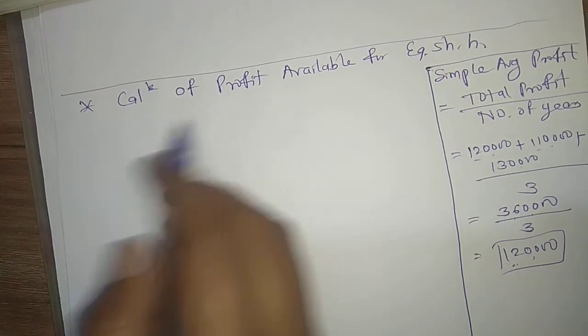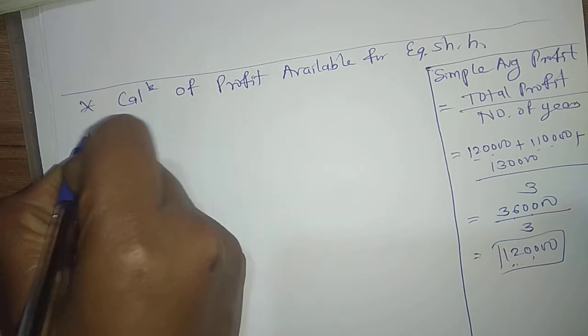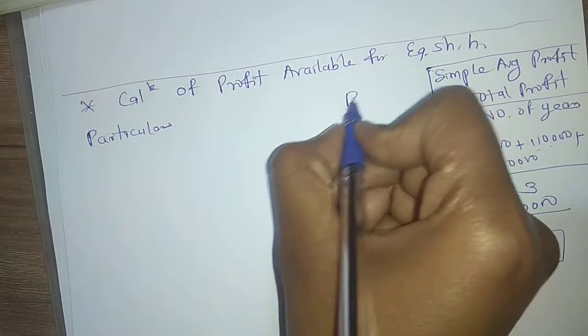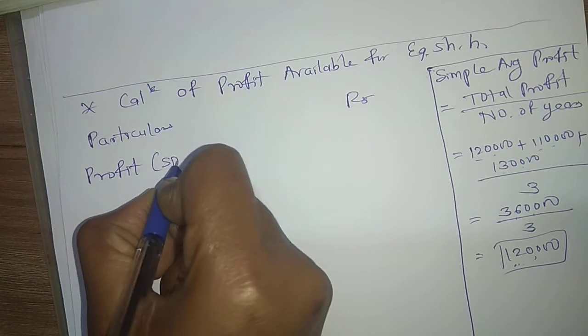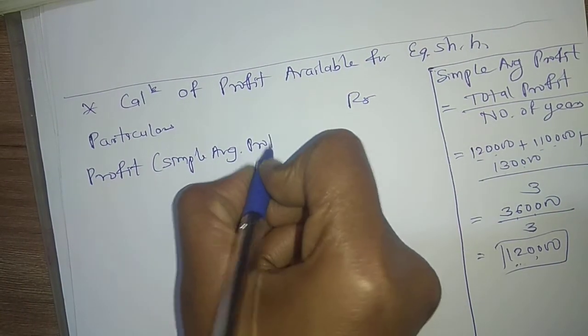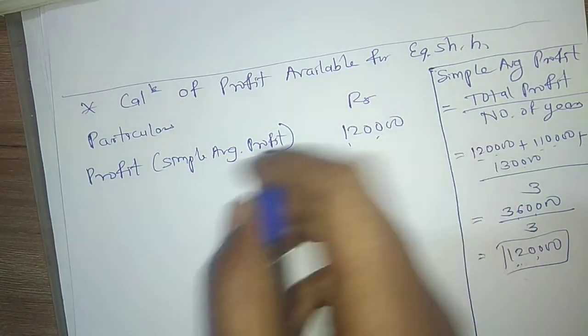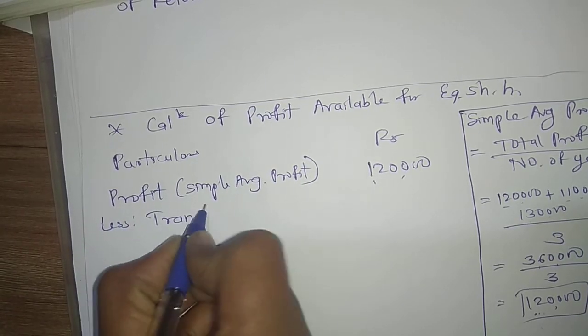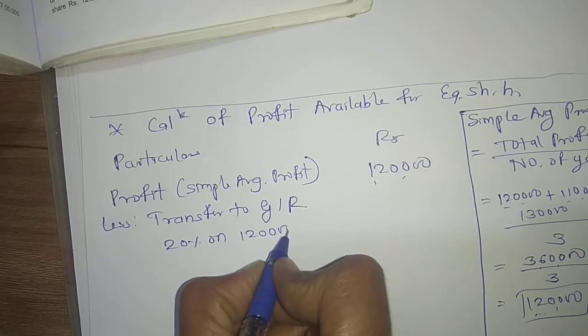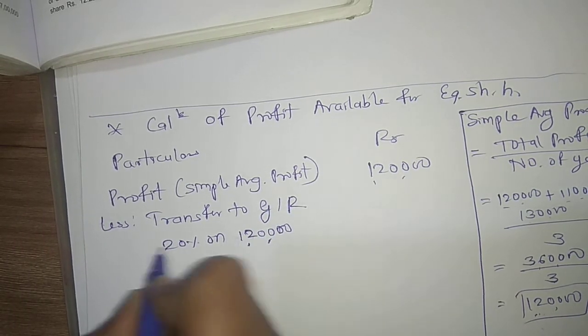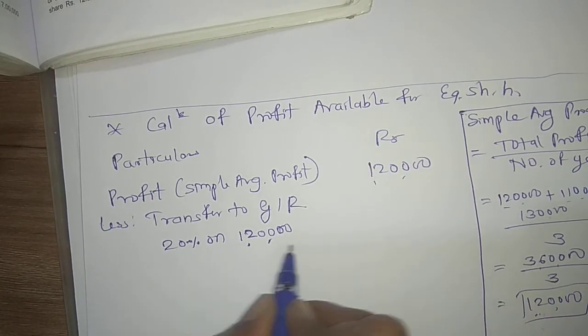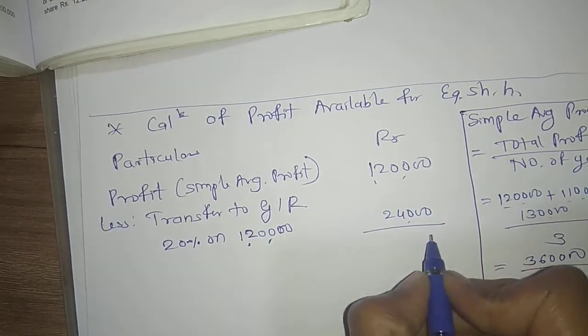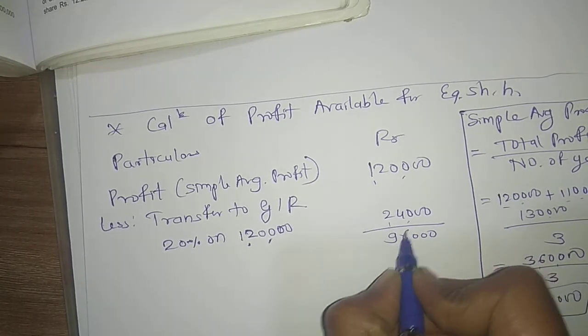We use this profit to calculate profit available for equity shareholders. Simple average profit: 1 lakh 20,000. Tax information is not given, so we do not deduct tax. The next compulsory item is transfer to general reserve — 20% on 1 lakh 20,000 equals 24,000. After deducting this, we get 96,000.